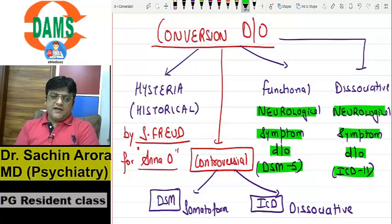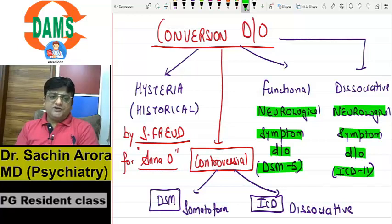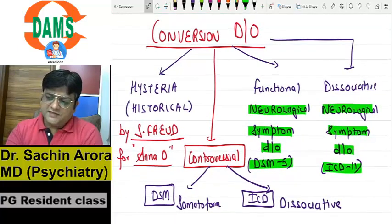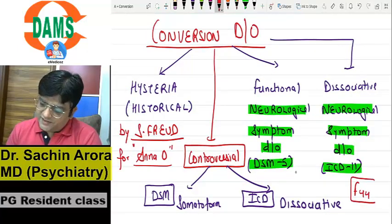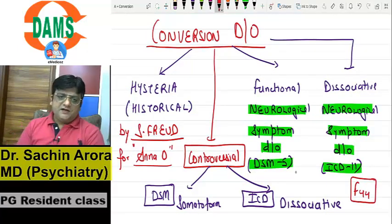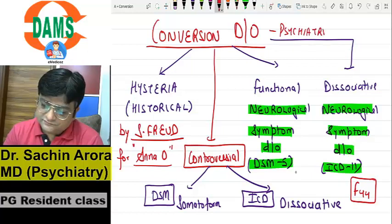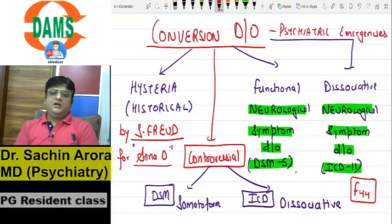I have mentioned earlier that there are some departments where people follow DSM-5 and some follow ICD-11. Suppose a case of pseudo-seizure comes — that is a very common thing — or a motor disorder comes: in your department, do you label it as dissociative or as conversion? Conversion disorder is one of the psychiatric emergencies and one of the most common calls you get from casualty.